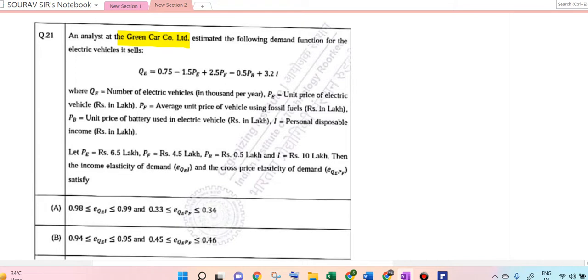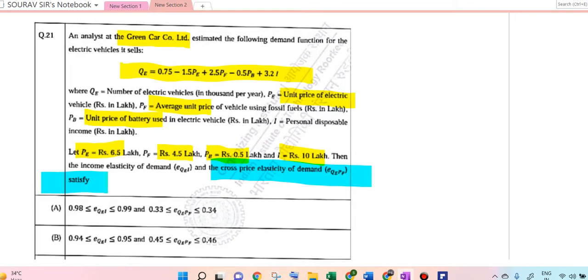Where QE equals number of electric vehicles sold. Variables: PE equals average unit price of electric vehicle, PF equals average unit price of fossil fuel vehicle, I equals per capita disposable income. PE equals 6.5 Lakhs, PF equals 4.5 Lakhs. You need to find the cross-price elasticity of demand.